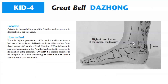Kidney 4 is located anterior to the medial border of the Achilles tendon, superior to the insertion at the calcaneus. To find Kidney 4: from the highest prominence of the medial malleolus, draw a horizontal line to the medial border of the Achilles tendon. From there, measure 0.5 cun in a distal direction. Kidney 4 is located in a depression anterior to the Achilles tendon, slightly superior to its insertion at the calcaneus. Alternatively, Kidney 4 is located posterior to the midpoint of a line connecting Kidney 3 and Kidney 5, anterior to the Achilles tendon.